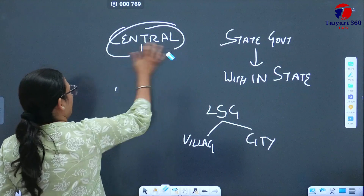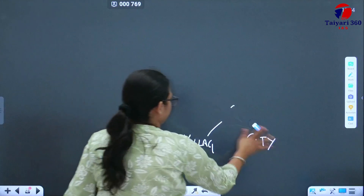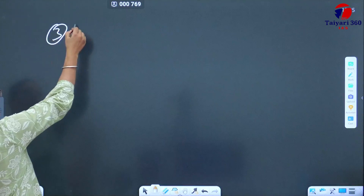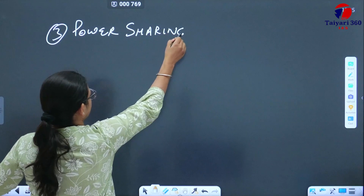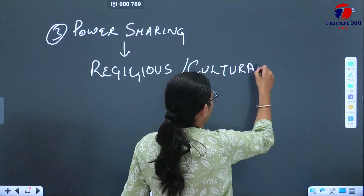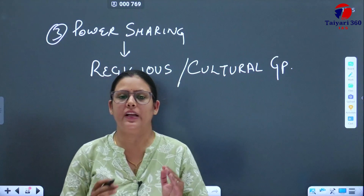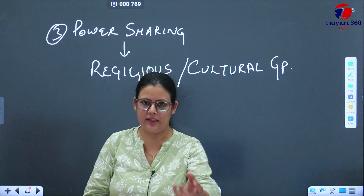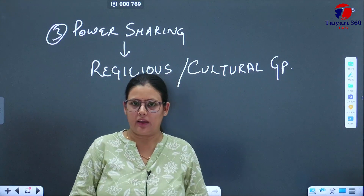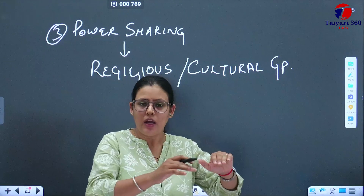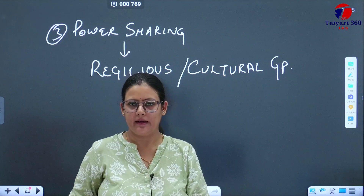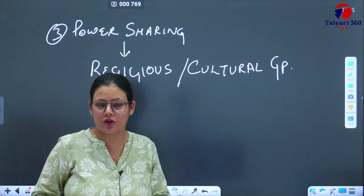The third form of power sharing is power shared between cultural and religious groups. We have specifically studied Article 29 and 30, which deal with cultural and educational rights. Cultural minorities in our country have been given certain rights. Religious minorities and cultural minorities are given reservations and power sharing so that they can protect their rights, so that their rights are not violated, and they don't feel that they are being attacked.